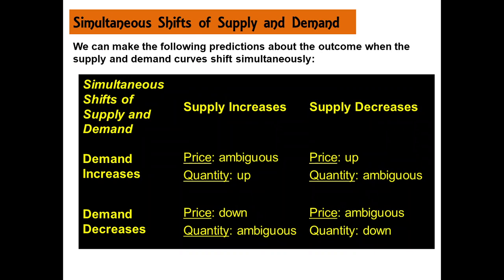With the help of this table, we can make predictions based on simultaneous shifts in supply and demand curves. If demand increases and supply also increases, the quantity demanded and supplied will go up, but what happens to price remains ambiguous — it depends on the relative strength of demand and supply forces. If demand increases and supply decreases, price is certainly going to increase, but quantity will be ambiguous — depending on the relative strength of demand increase versus supply decrease.